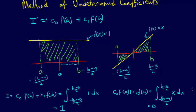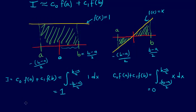We have two equations and two unknowns, so we can solve for the unknowns. We have c0 f(a) plus c1 f(b) equals 0, and c0 f(a) plus c1 f(b) equals 1.